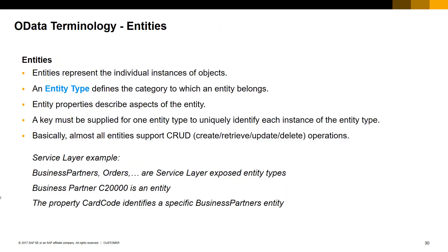Let's now analyze in more detail the terminology of the OData metadata document and apply it to our specific service layer OData metadata document. First of all, what is an entity? Entities represent the individual instances of objects, and an entity type defines the category to which an entity belongs. Entity properties describe a specific entity that will be uniquely identified by a key. In our service layer, we have objects like business partners, orders and so on. These objects will be represented in a metadata document as entity types, while each instance of a business partner object will be an entity. The key of our business partners entity type is the property CardCode, and will uniquely identify a specific business partner entity.